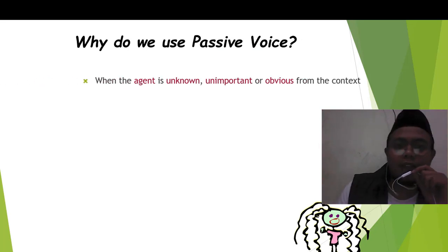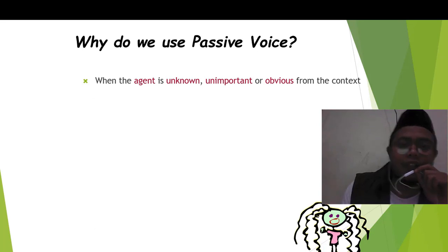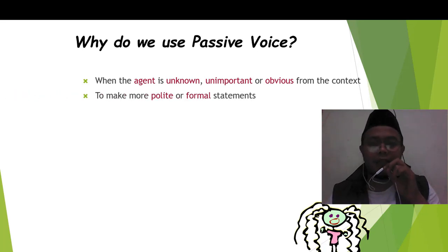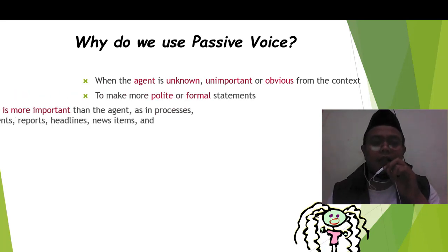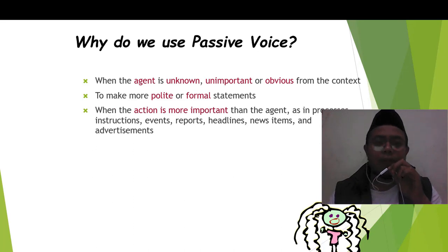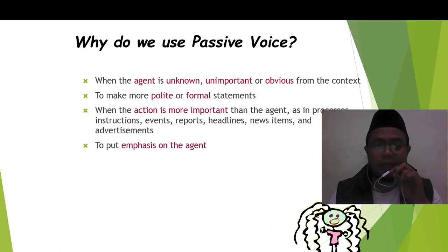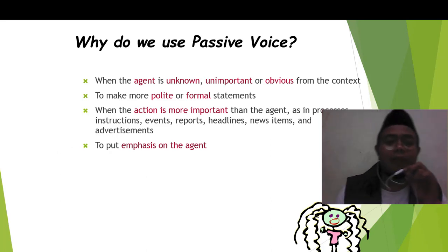What is the importance of passive voice? When the agent is unknown, unimportant, or obvious from the context. To make a more polite or formal statement. And when the action is more important than the agent — as in processes, instructions, events, reports, headlines, news items, and advertisements. To put emphasis on the agent. Bisa juga untuk memberikan penekanan pada agentnya.